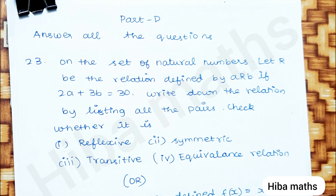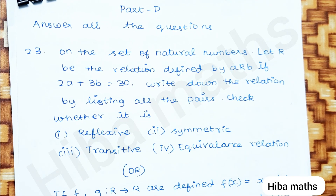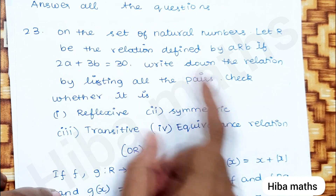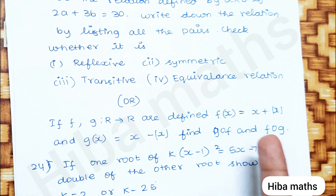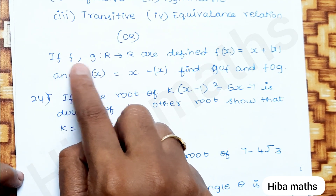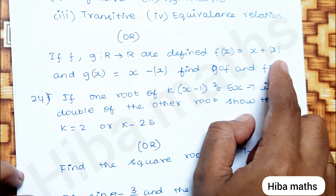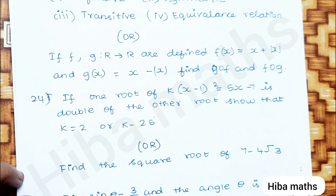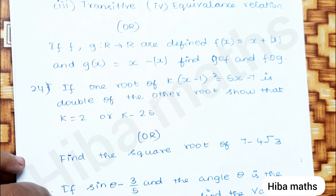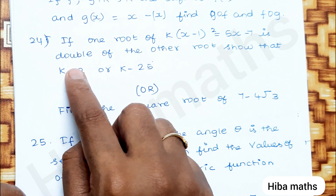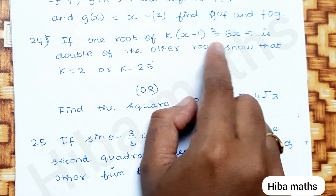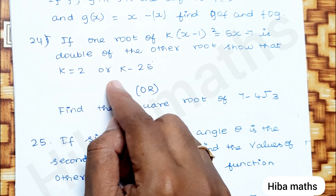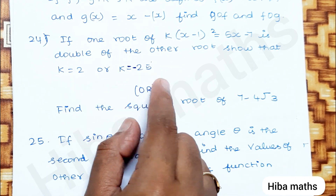Try to answer all questions. On the set of natural numbers, given 2a + 3b = 30, check whether the relation is reflexive, symmetric, transitive, and equivalence. If f, g: ℝ → ℝ are defined by f(x) and g(x), find g∘f and f∘g. If one root of k(x−1) = 5x − 7 is double the other root, show that k = 2 or k = −25.